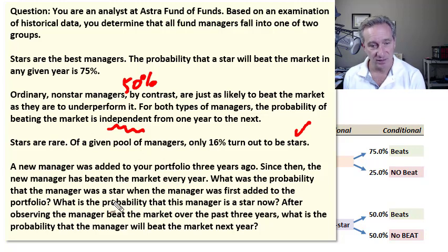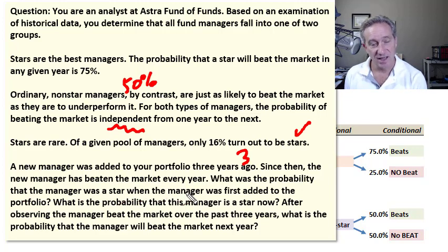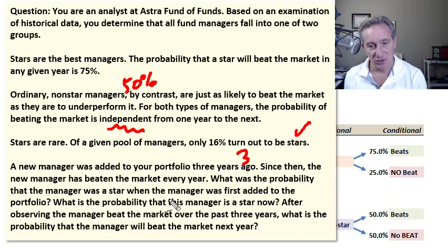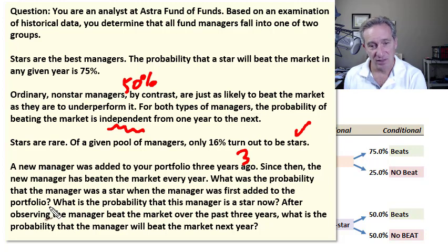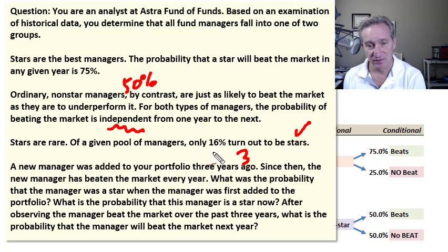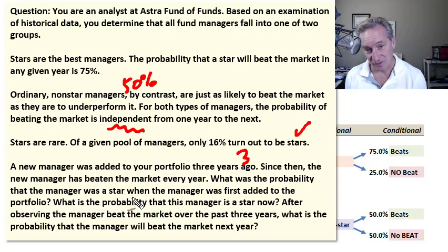Those three assumptions are all we need. The question is: a new manager was added to your portfolio three years ago, and since then the manager has beaten the market every year. What was the probability that the manager was a star when first added to the portfolio? That's essentially a throwaway question — we were already given that. Before we have any information about performance, it's 16%, the unconditional probability.